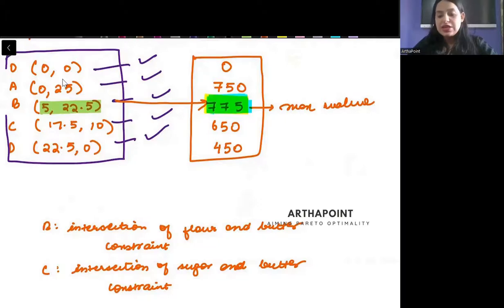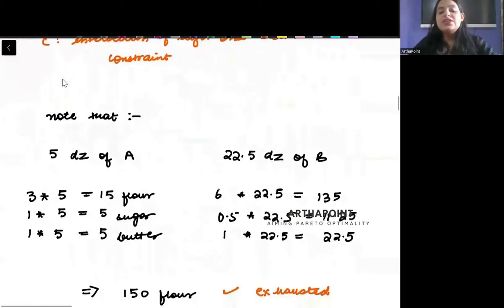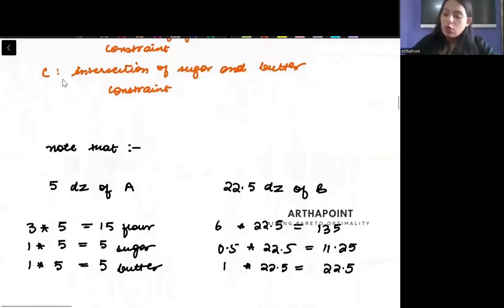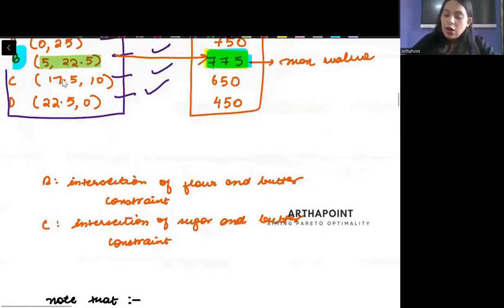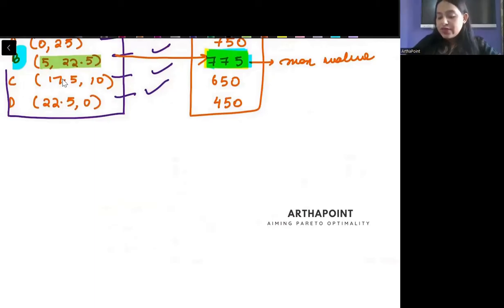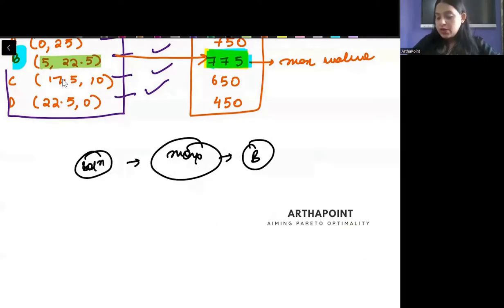Since this maximum value is coming at point B, we will say that this is the solution to this problem. The solution that maximizes my revenue, I achieve that at point B, and my X1 is 5 and my X2 is 22.5.